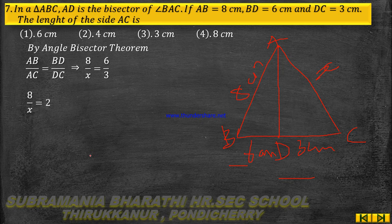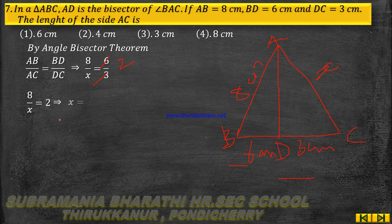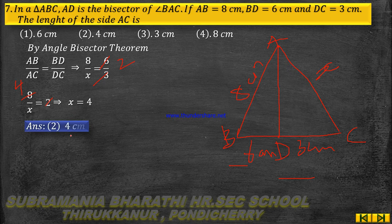Now, if we do the cross multiplication: 8 by X equals 6 by 3, which simplifies to 8 by X equals 2. So X is equal to 4. Therefore AC equals 4 cm — option 2 is correct.